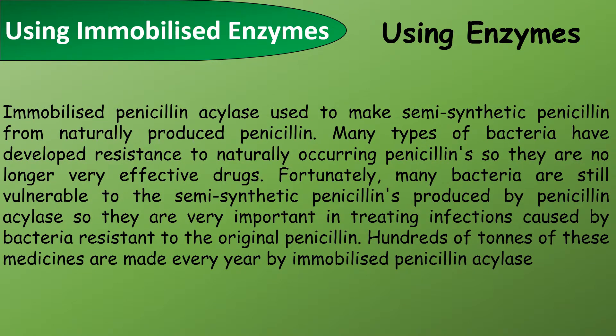There are a wide range of uses for immobilized enzymes, and in this video I will go through three of them. Immobilized penicillin acylase is used to make semi-synthetic penicillin from naturally-produced penicillin. Many types of bacteria have developed resistance to naturally-occurring penicillins, so they are no longer affected by the drugs. Fortunately, many bacteria are still vulnerable to the semi-synthetic penicillins produced by penicillin acylase, making them very important in treating infections caused by bacteria resistant to the original penicillin. Hundreds of tons of these medicines are made every year by immobilized penicillin acylase.